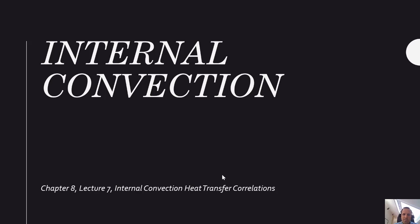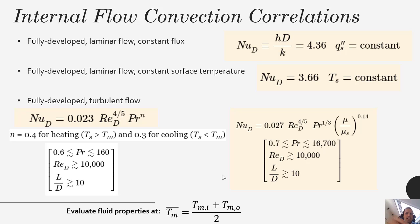There are various combinations and configurations, so calculating the Nusselt number and your H, your heat transfer coefficient, is still a relevant topic here. For internal convection, when you have fully developed laminar flow with constant flux, your Nusselt number ends up being a constant 4.36.